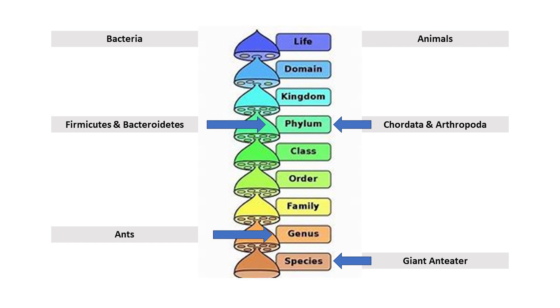Chordata and Arthropoda are phyla in the animal kingdom, just like Firmicutes and Bacteroidetes are phyla in the bacteria kingdom. So this report informs us about all animals with spinal cords — Chordata — in comparison to all insects, crustaceans, and millipedes — Arthropoda. What are you going to do with this information? Nothing. Why is this even in the reports? It's useless and unactionable.